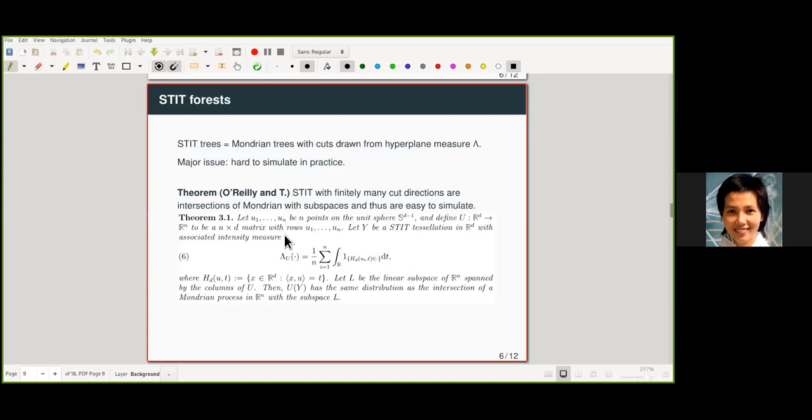And then, so our first result with Eliza recently is that at least for the case where you have STIT with finitely many cut directions, you can simulate them as you take a Mondrian process in a higher dimensions and then you intersect it with a subspace. So here's a formal statement. If I have normal directions, U1 up to UN, these are points on the unit sphere. So I can line them up as rows of my matrix U. And if I have a STIT tessellation with these normal directions and with the uniform measure over these directions, then this guy has the same distribution as the intersection of a Mondrian process in RN with an appropriately constructed subspace L.